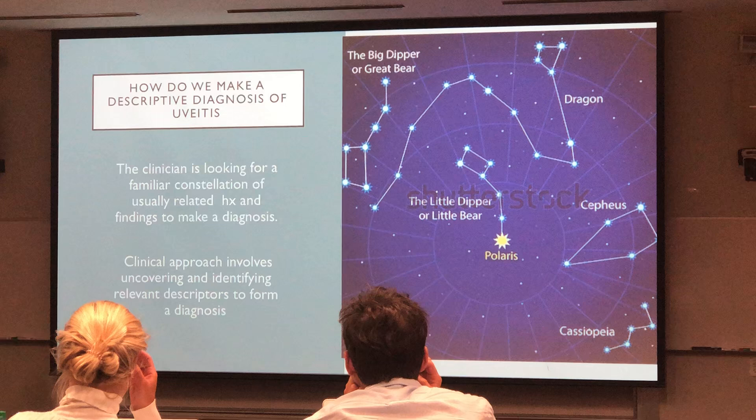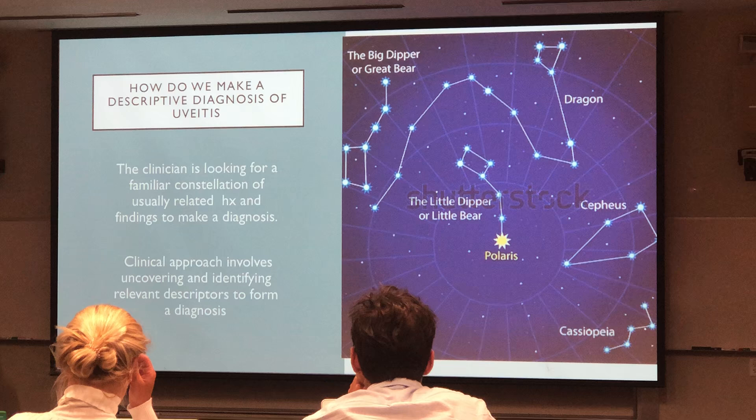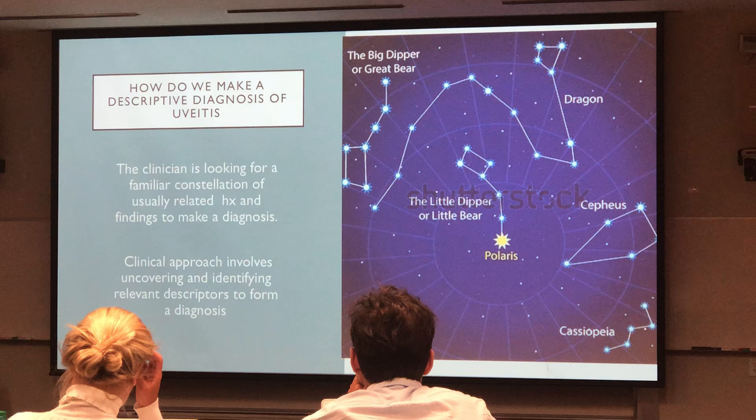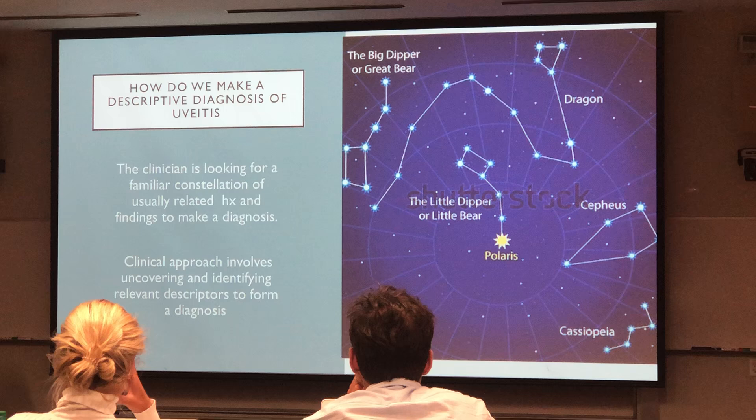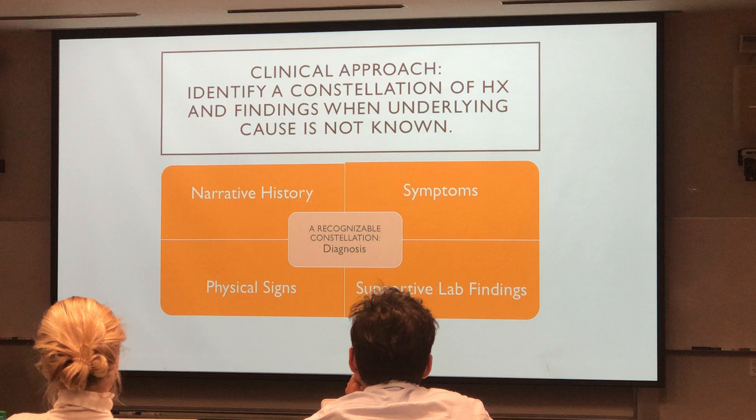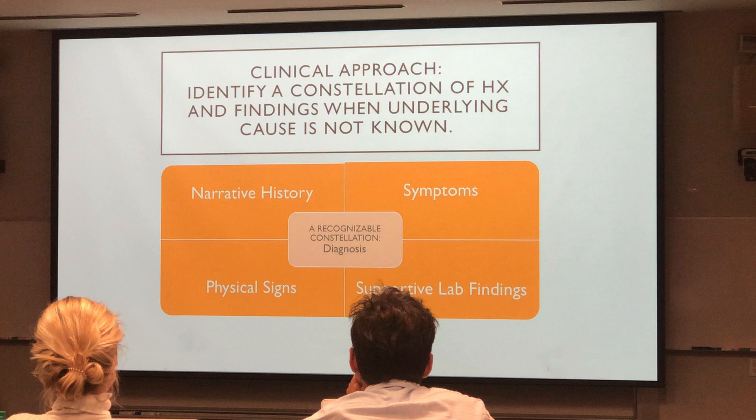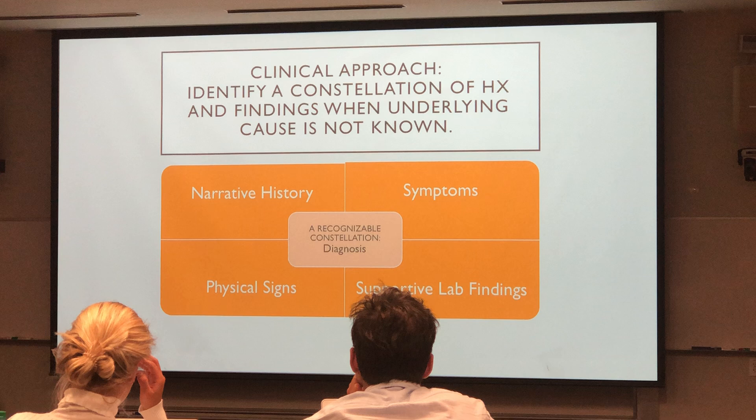How do we make a descriptive diagnosis of uveitis? As clinicians, we like to look for a familiar pattern or a familiar constellation. Each of these stars that make up the constellation are descriptors that we need to find in our workup. In a schematic form, looking at the clinical approach, we look for the process — getting a narrative history, looking at the symptoms, physical signs — and order lab tests as needed.